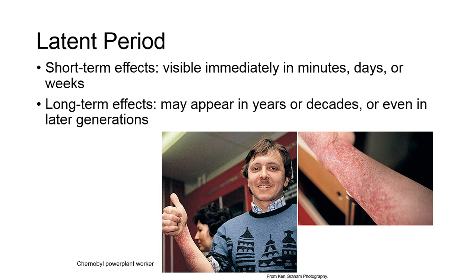The biological effects of radiation are arbitrarily divided into short-term effects and long-term effects. Short-term effects, sometimes called immediate or early effects of radiation, are visible immediately in minutes, days, or weeks. Long-term effects, sometimes called delayed or late effects of radiation, are effects which appear years, decades, and sometimes generations later.